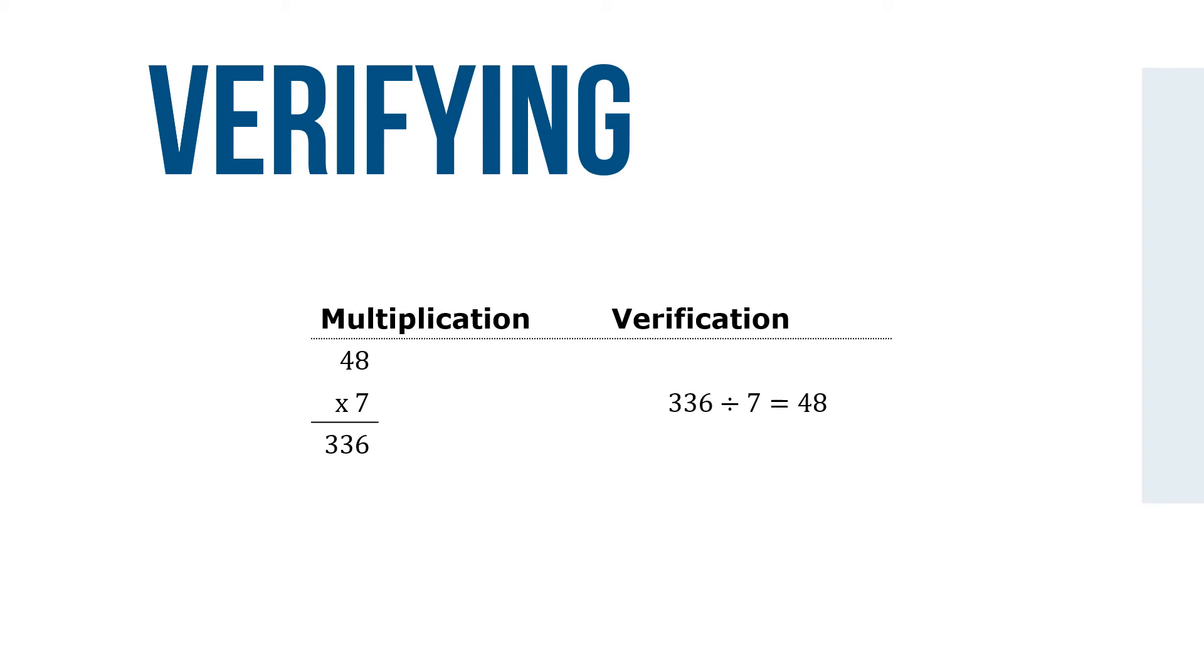To check your multiplication for accuracy, divide the product by the multiplier. If the multiplication was correct, this will yield the multiplicand. For example, use a table like this.